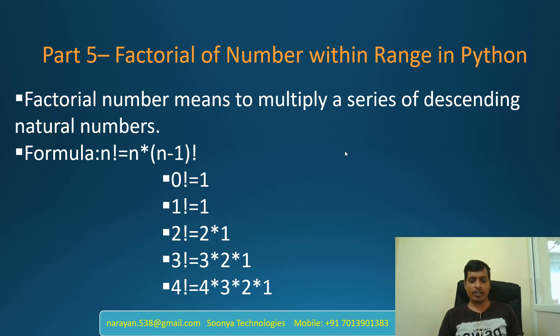What is factorial number? Factorial number means to multiply a series of descending natural numbers. The formula to calculate factorial number is: n factorial is equal to n into n minus one factorial.